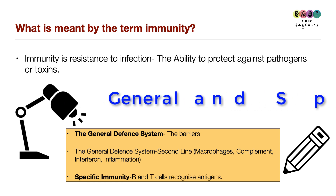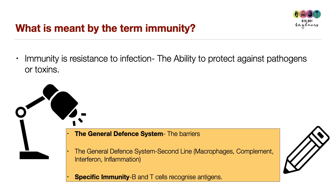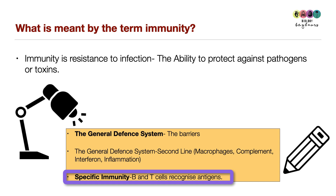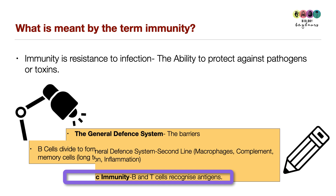The general defence system has two lines: the first is physical barriers such as the skin, and the second line includes macrophages, white blood cells, the complement system of proteins, viral-infected cells that produce interferon, and the inflammatory response. Then we have the specific immune response, which involves B cells and T cells recognising specific antigens.